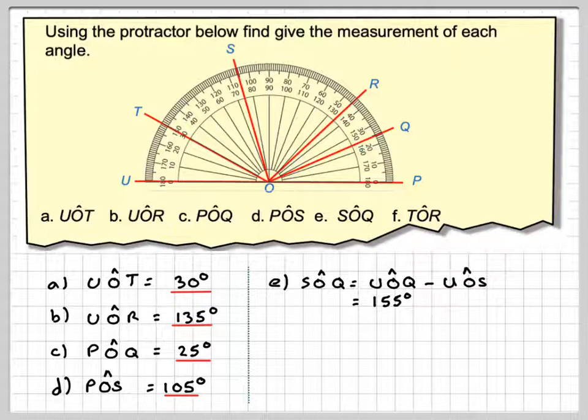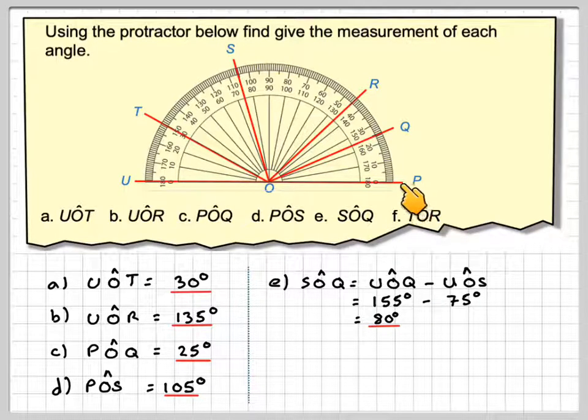And then we're going to take away UOS, which is 75. So we're reading on the inside, 75 degrees. So that's going to be 80 degrees. Now I could have done it the other way around. I could have done POS minus POQ.